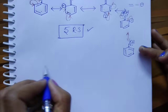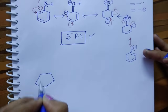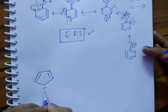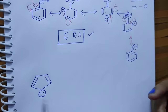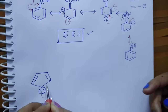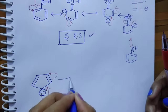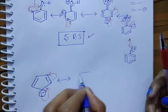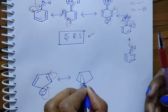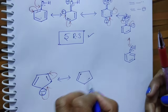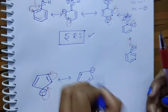Now let us see one more structure — the cyclopentadienyl anion. How many resonance structures are possible for this? Just write: these two electrons shift, these two electrons shift. This is as-is; when these two shift, we get a bond; when these two electrons shift, we get a negative charge.